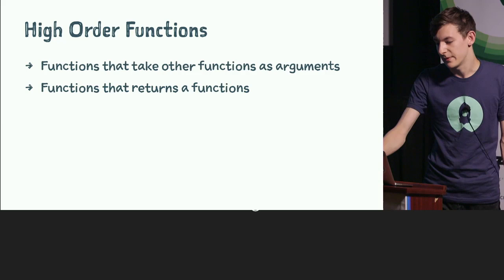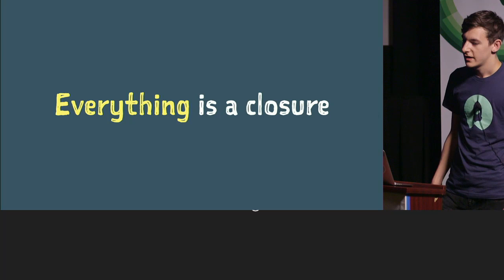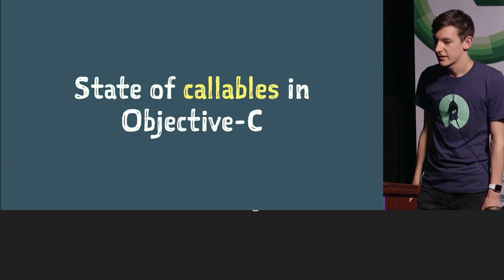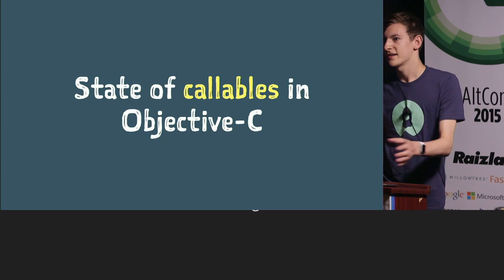Now in Swift, everything is a closure, so this works really well — functions and closures are identical when used. It's not entirely true in computer science, but in Swift it is. In Objective-C, this is slightly different. Let's look at all the callables in Objective-C — things you pass arguments to and return a result. We have methods defined on an object using a dash to represent an instance method, then the return type, then the method name, and then the arguments and the implementation.